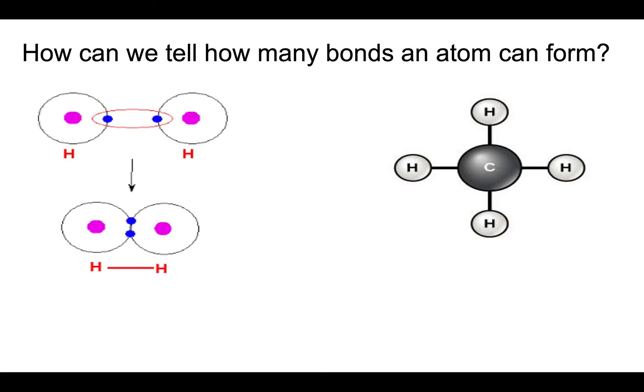How can we tell how many bonds an atom can form? It really depends on how many electrons is present on the outer shell which is also called the valence shell. In case of hydrogen, hydrogen only has one electron in its outer shell or valence shell and it only needs one more electron to complete this shell. So all it needs is one and therefore hydrogen can only make one bond with any other atom. Carbon on the other hand is different.